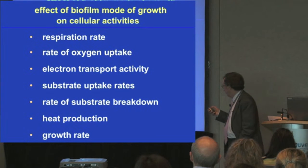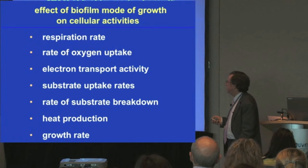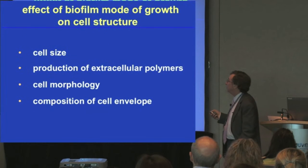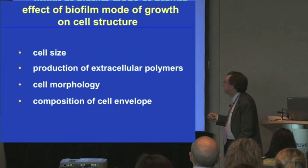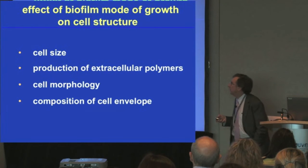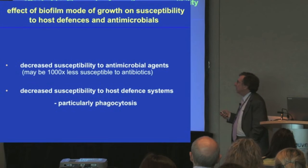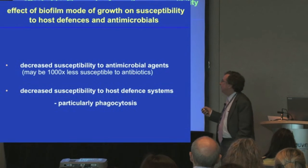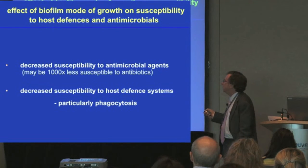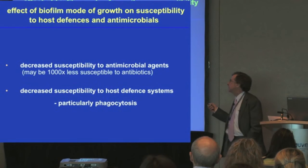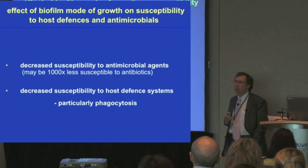Respiration rate, rate of substrate breakdown, and growth rate are all affected by the mode of growth. Also the cell size, morphology, and composition of the cell wall are all affected by the mode of growth. But critically, we find that bacteria growing in biofilms have a greatly decreased susceptibility to antimicrobial agents.